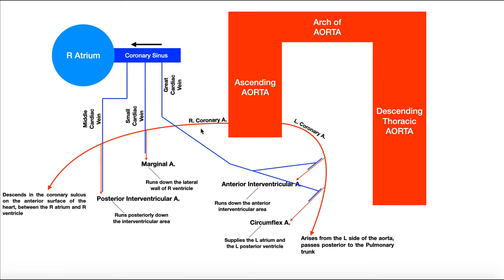Are these the only arteries that branch from the coronary arteries? No, there are a lot of others. There are arteries that specifically supply the sinoatrial node and the AV node, an artery specifically for the left ventricle, and arteries that supply the atria. These are just the major ones discussed in a typical anatomy course.